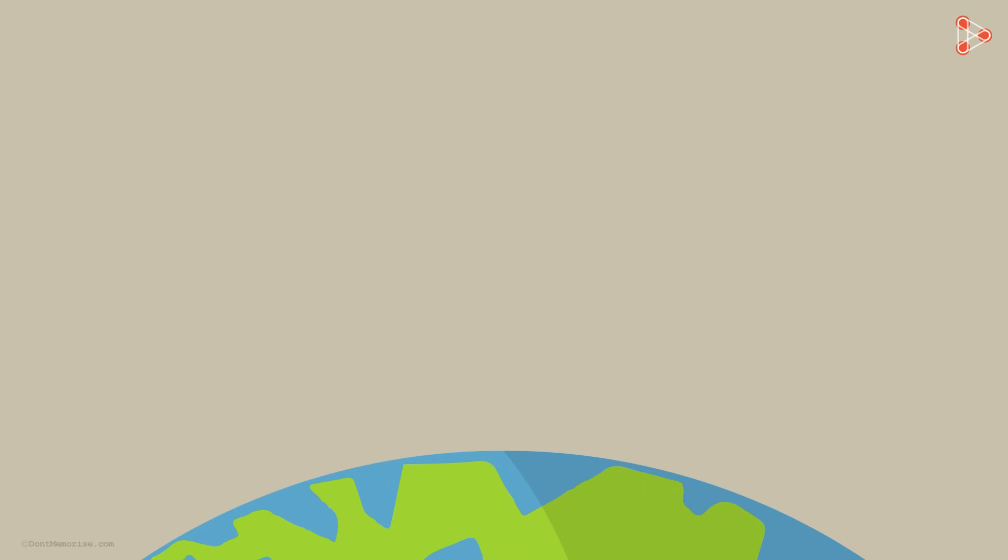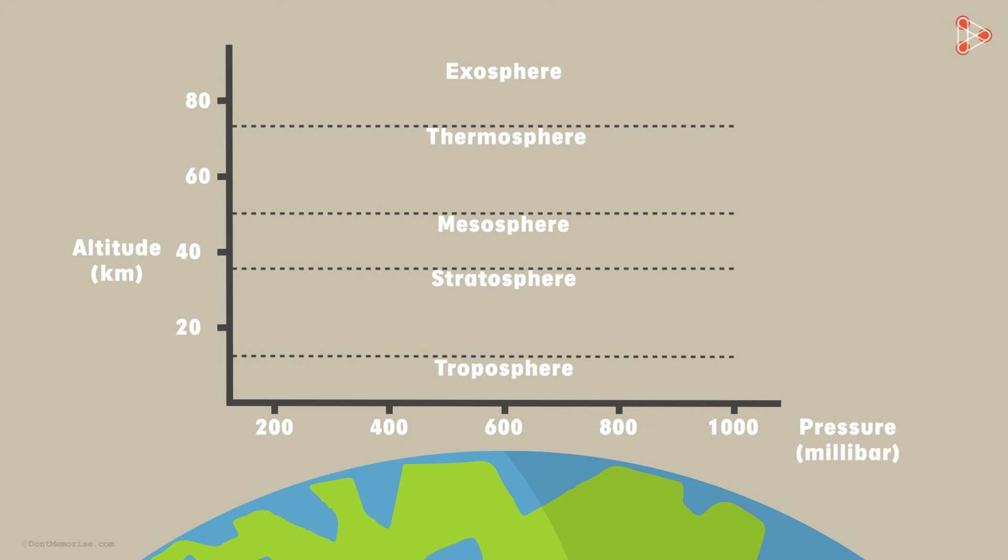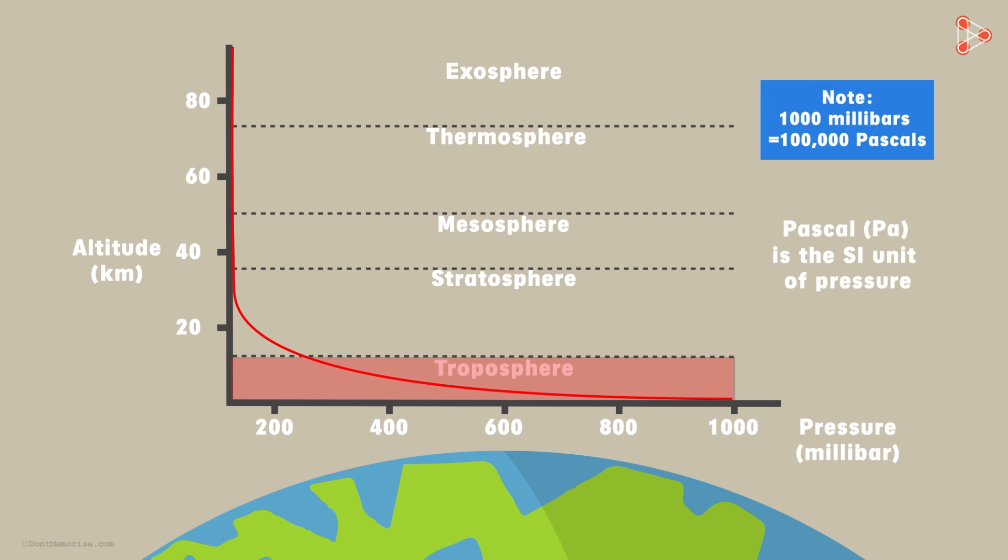Let's look at an interesting graph now, a graph which represents pressure at a particular altitude. The graph also represents how the pressure varies from layer to layer. The troposphere layer is closest to the surface of the earth and the pressure in this layer goes up to 100,000 Pa, where Pascals, represented by Pa, is the SI unit of pressure. This is massive pressure.